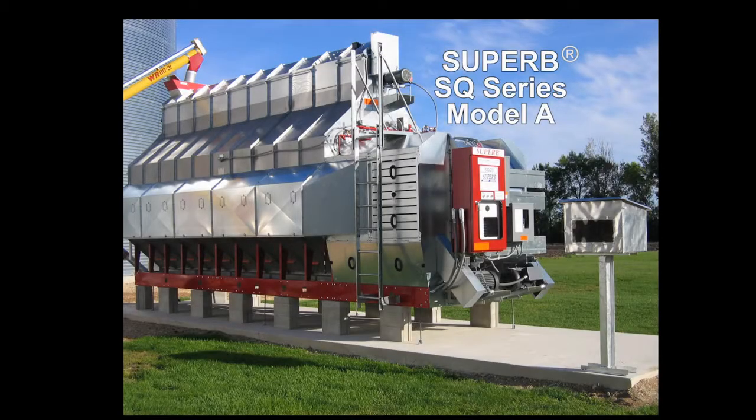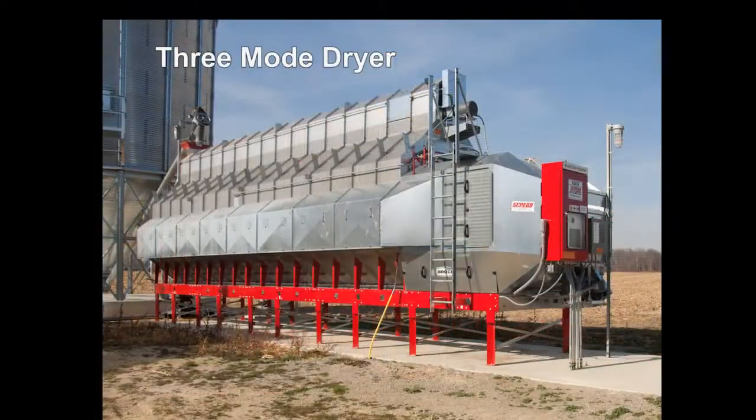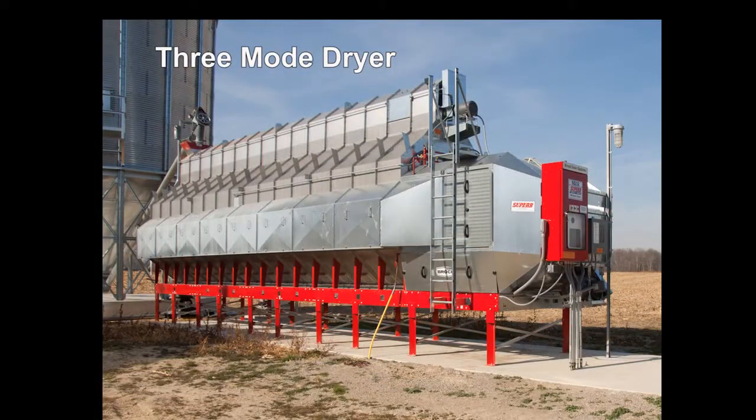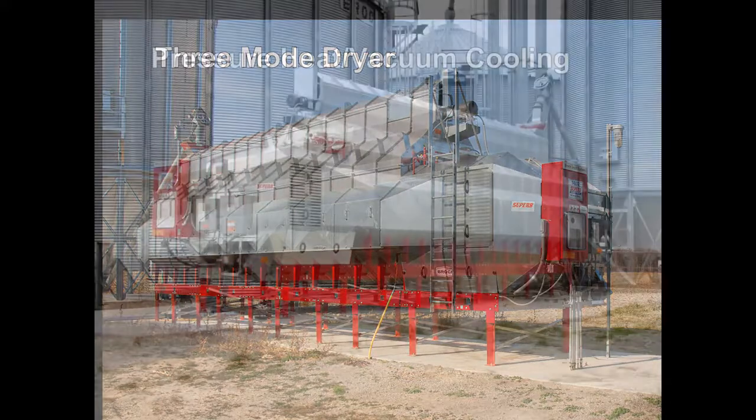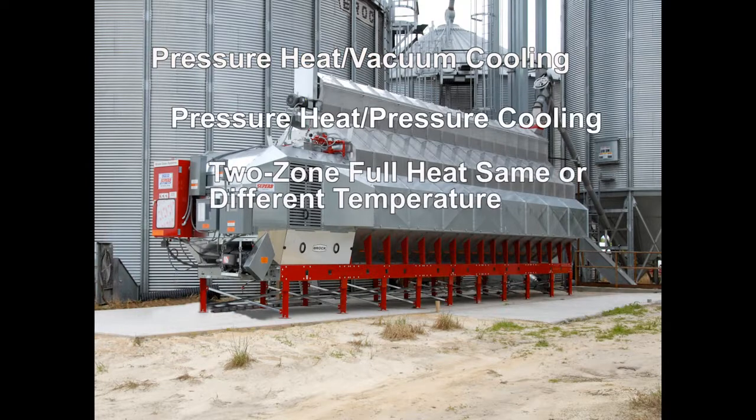The Brock Superb Energy Miser SQ Series Model A Grain Dryer is a two-zone dryer with two plenums. The Model A can be operated as a three-mode dryer with the farmer choosing either pressure heat vacuum cooling, pressure heat pressure cooling, or two-zone full heat with the same or different temperatures in each plenum.